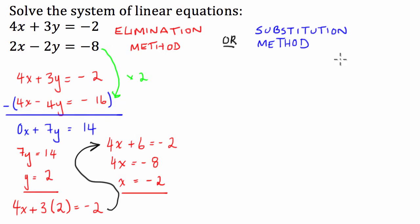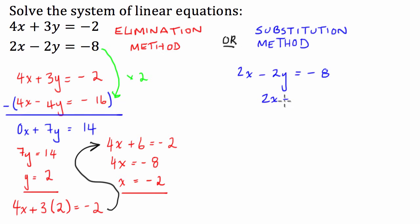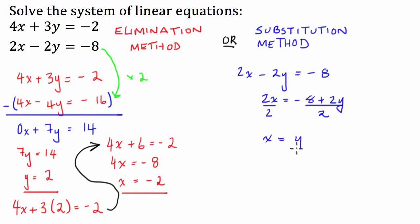Now let's go on to the substitution method. This involves rearranging one of the formulas — we'll use the bottom one as it's going to be easier — and making it one variable in terms of the other. I'm going to make it x in terms of y. So the function I have is 2x minus 2y equals negative 8. I take the 2y across to the other side, giving us 2x equals negative 8 plus 2y. Then I divide both sides by 2, and I'm left with x equals y minus 4. So now I have a function that expresses one variable in terms of the other.